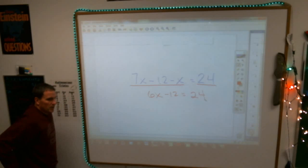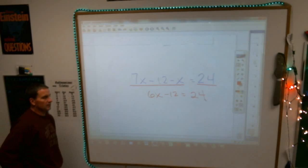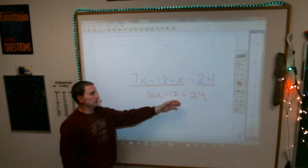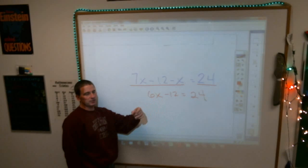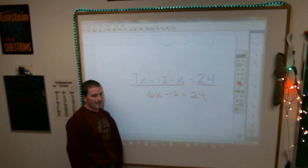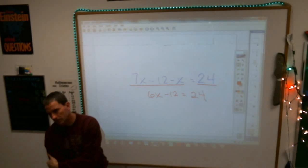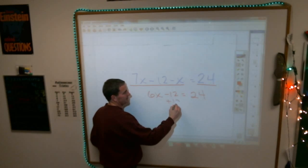Next step then, Mitch, would be to do what? In my quest to get the letter x by itself, I have a choice. I've got to do the opposite of that, or I've got to do the opposite of that. Which one am I going to do the opposite of? I'll do the addition and subtraction stuff first. Opposite of subtracting 12, the inverse operation of subtracting 12 is? Plus 12. Yes, or adding 12.